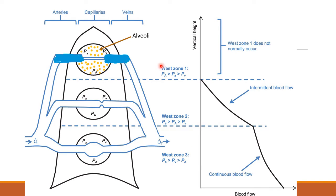In West Zone 1, the alveolar pressure is higher than the arterial pressure, which is higher than the venous pressure, and because of that, capillary collapse has happened.